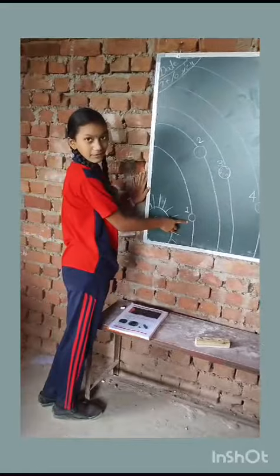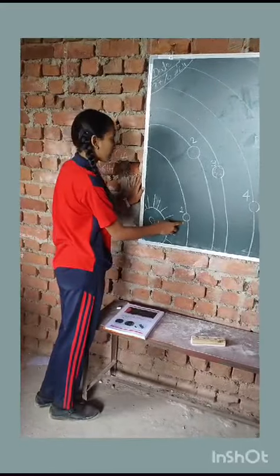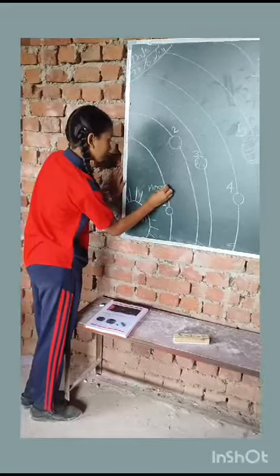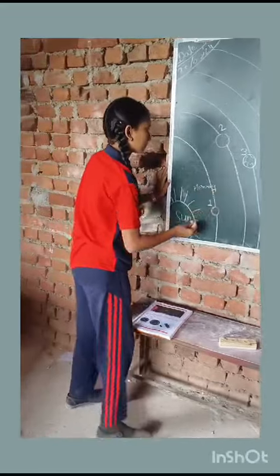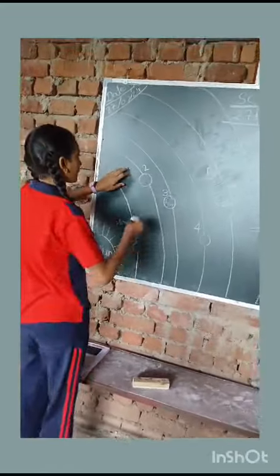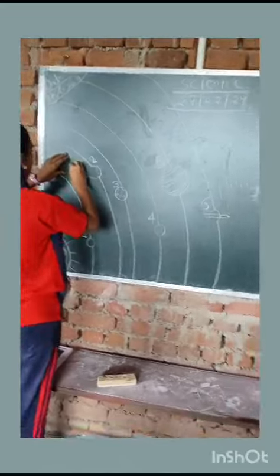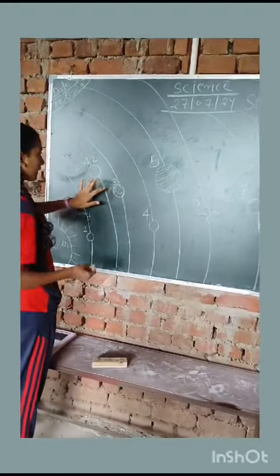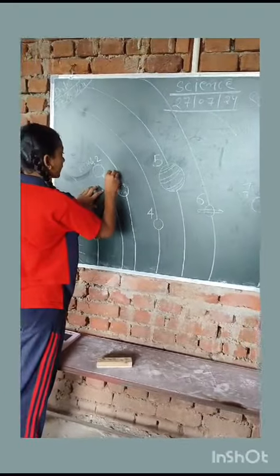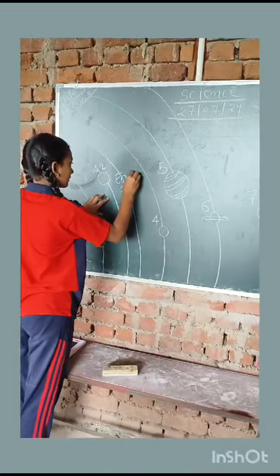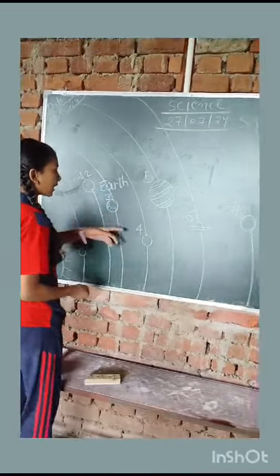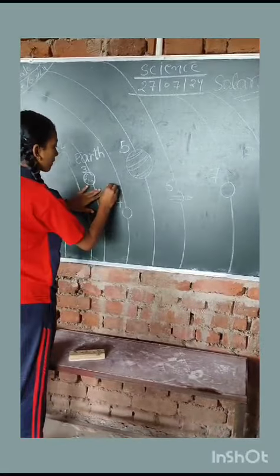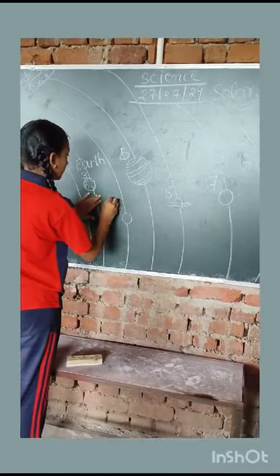This is the first planet, Mercury. This is the second planet, it is called Venus. This is the third planet, it is our Earth. This is the fourth planet of our solar system, it is called Mars.